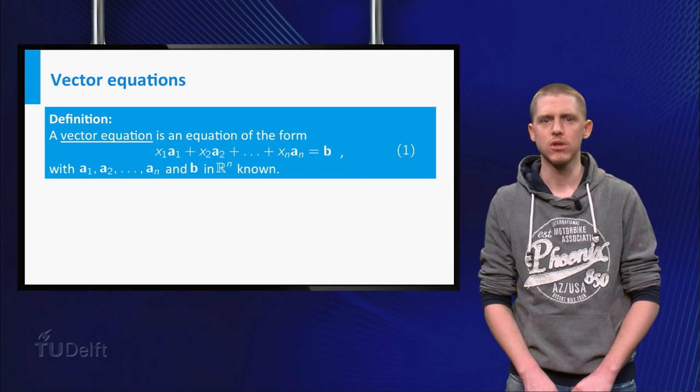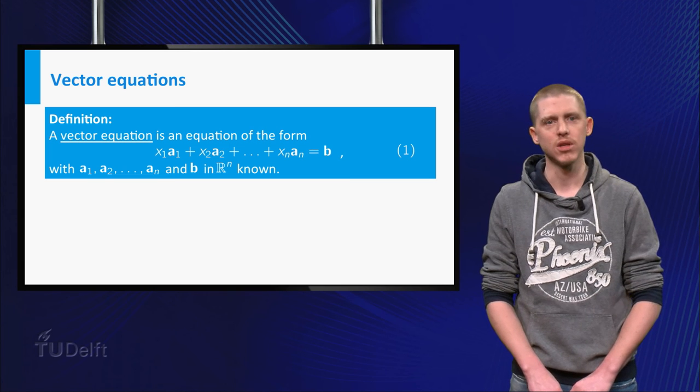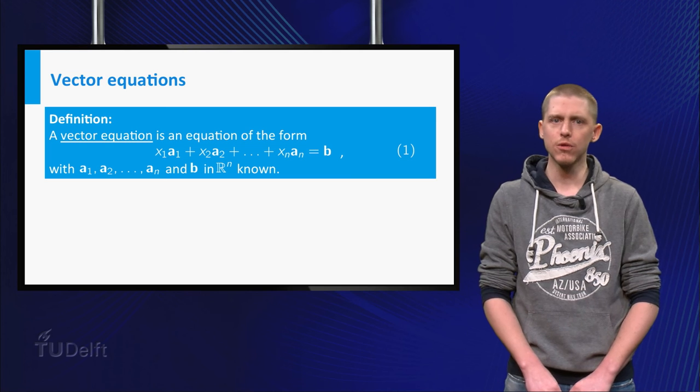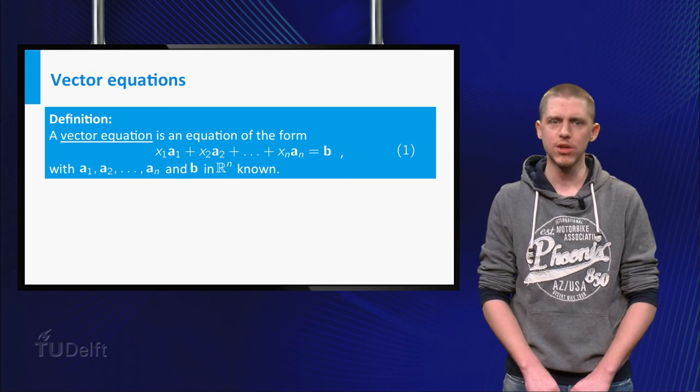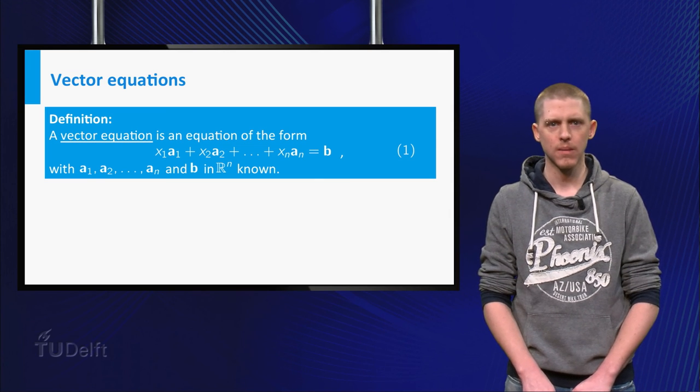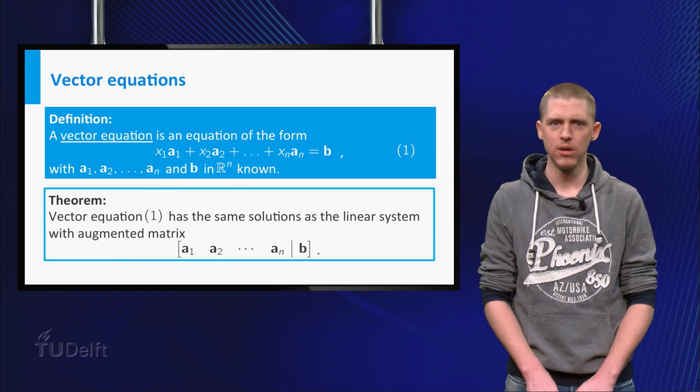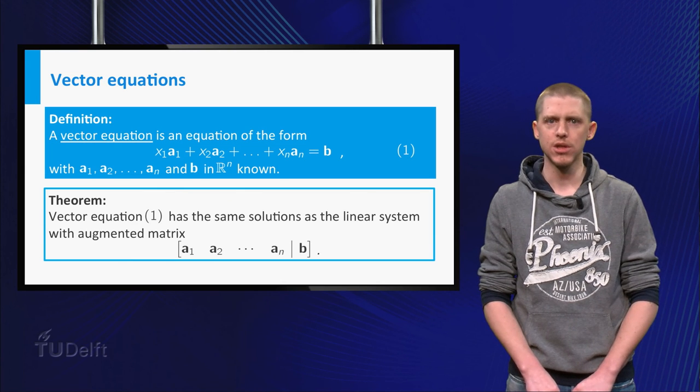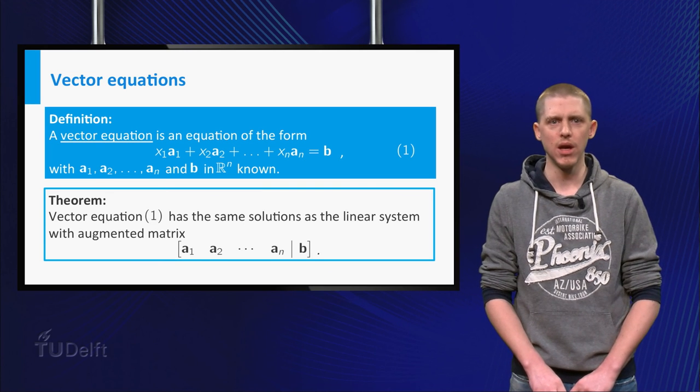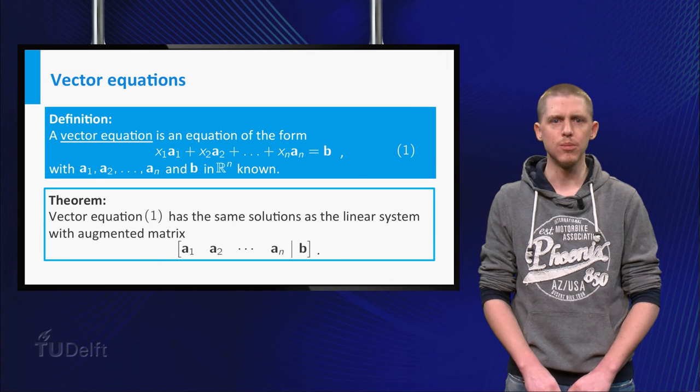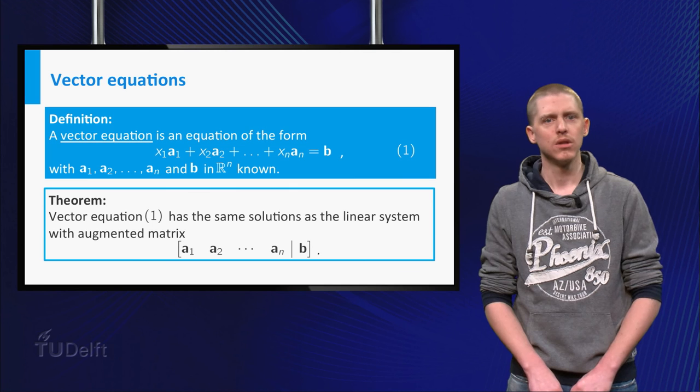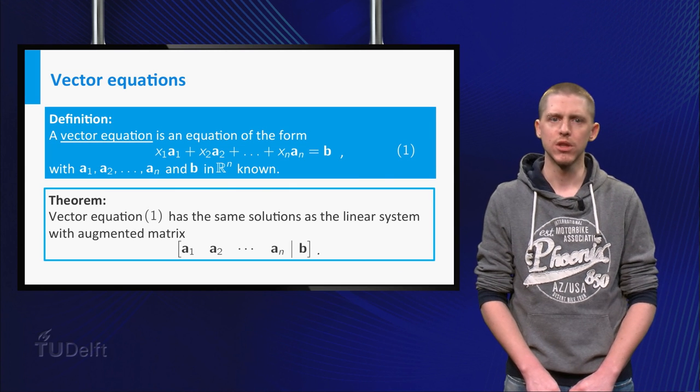The first equation on the previous slide, x1 times a1 plus x2 times a2 equals b is an example of a vector equation. When you try to solve this vector equation, you arrive at a linear system after some manipulation. In general we can say the following. Vector equation 1 has exactly the same solution set as the linear system with the augmented matrix with columns a1 up to an and b. You can even say that b is a linear combination of a1 up to an if and only if the linear system with the augmented matrix is consistent.